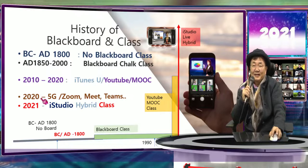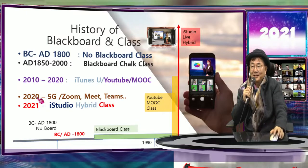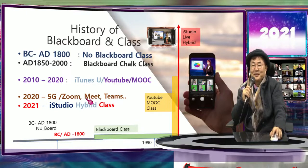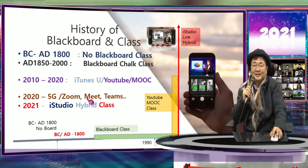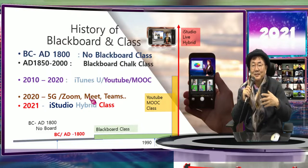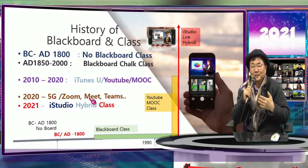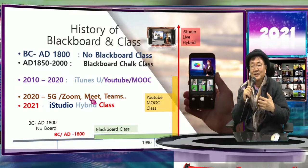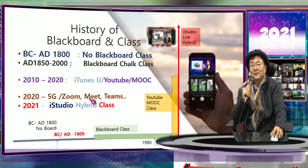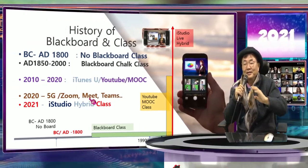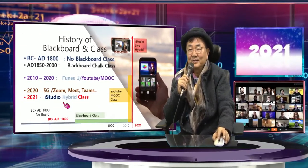Suddenly after Corona, everybody already had 4G and 5G platforms, and they use Zoom, Microsoft Teams, Google Meet, Cisco WebEx. All these tools have been published to make multi-person connections — not only peer-to-peer like Skype used early on, but also multiple people using screen sharing to have a blackboard screen together.